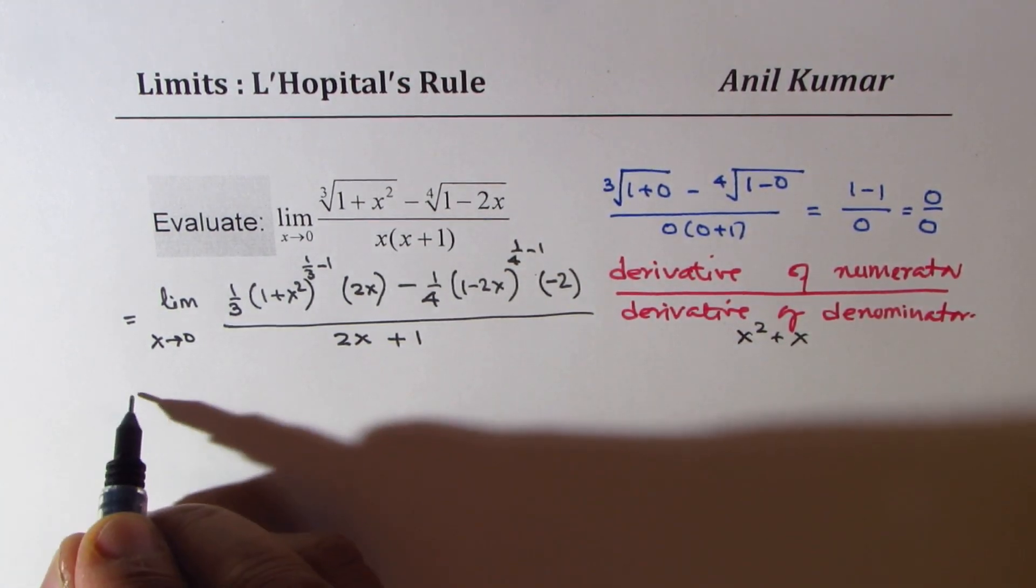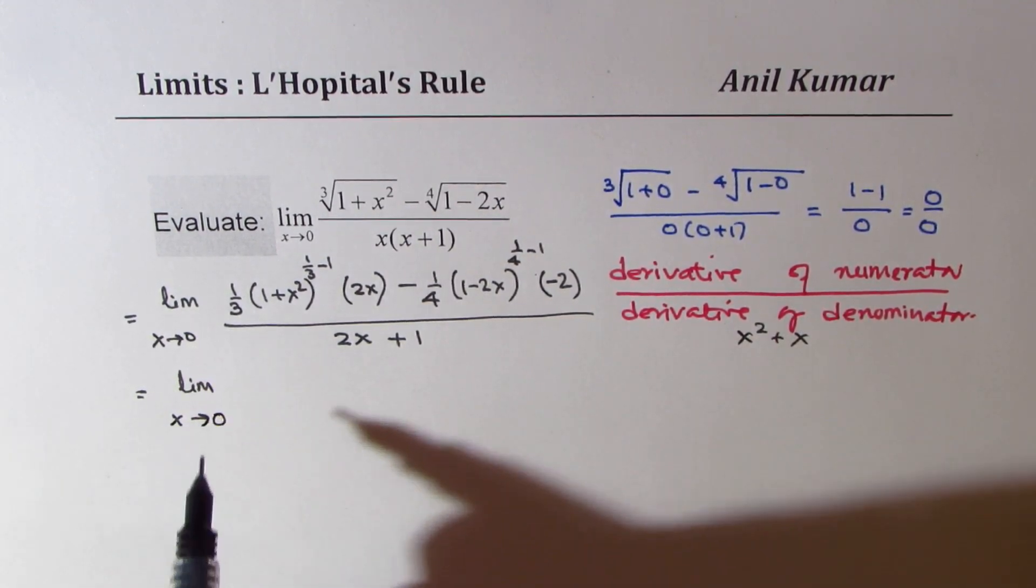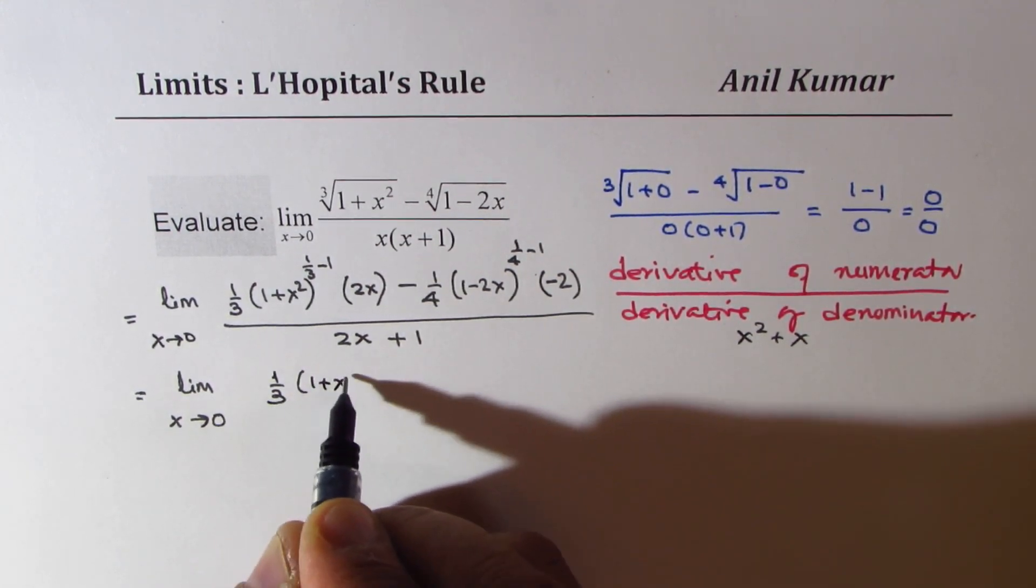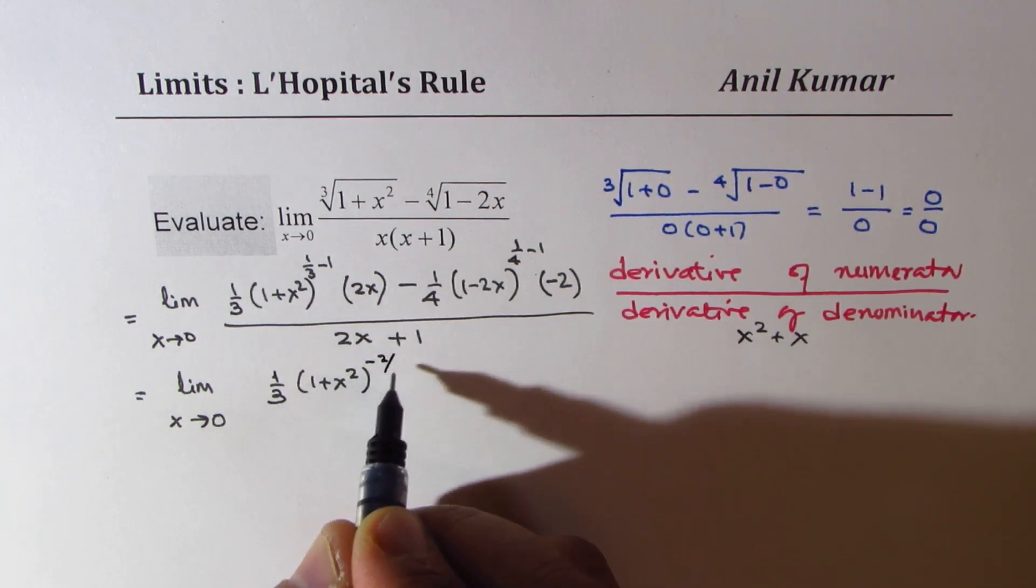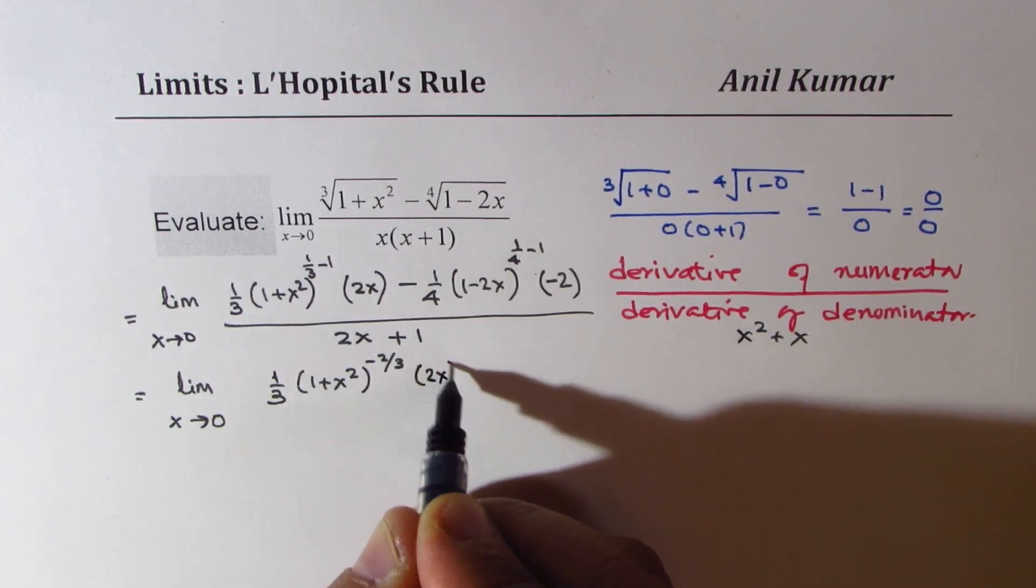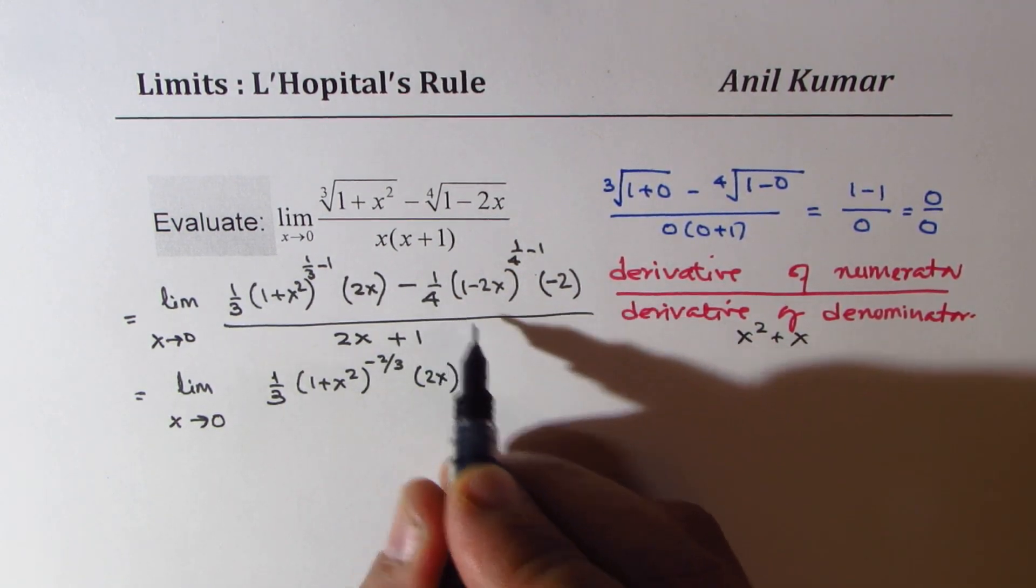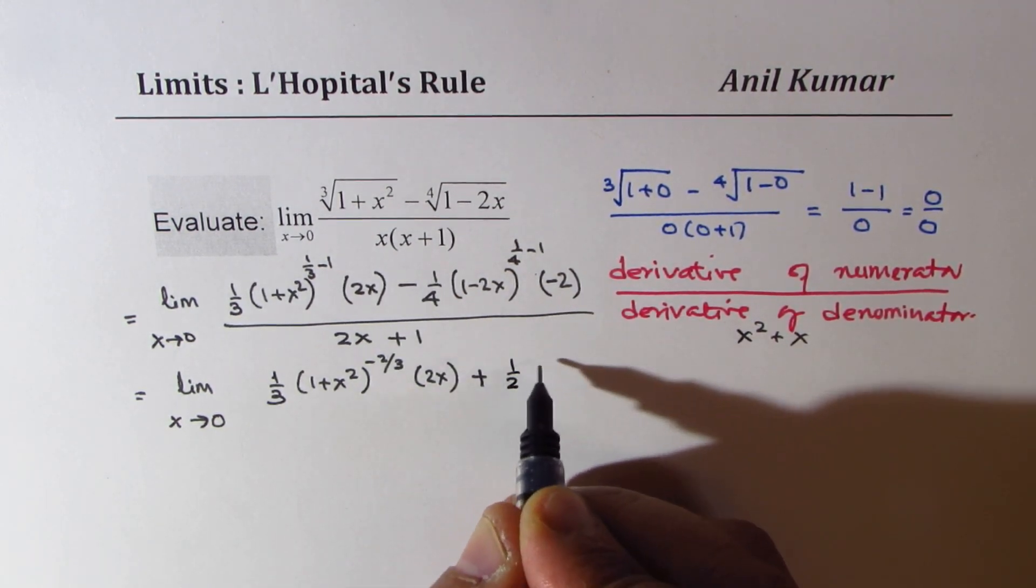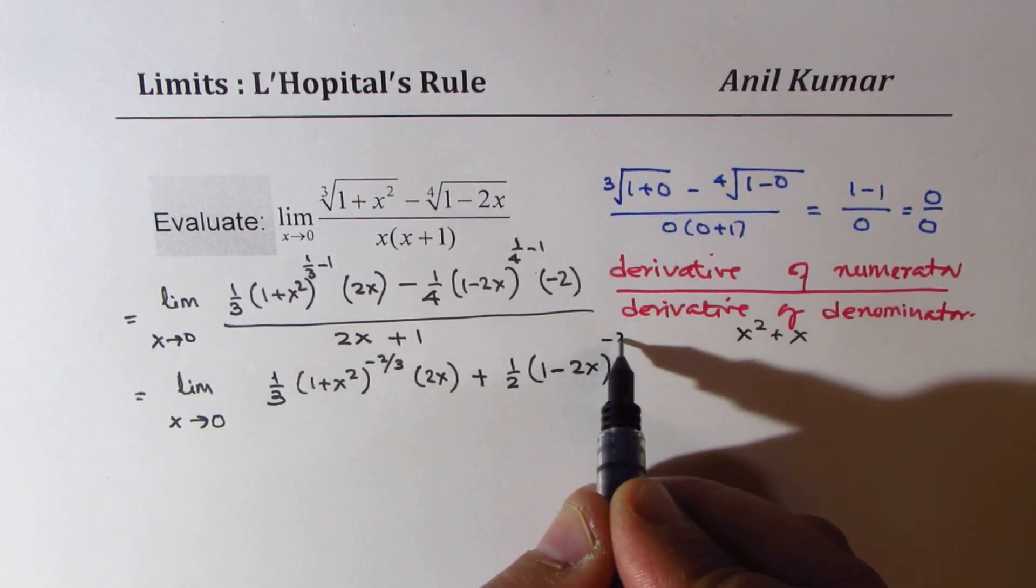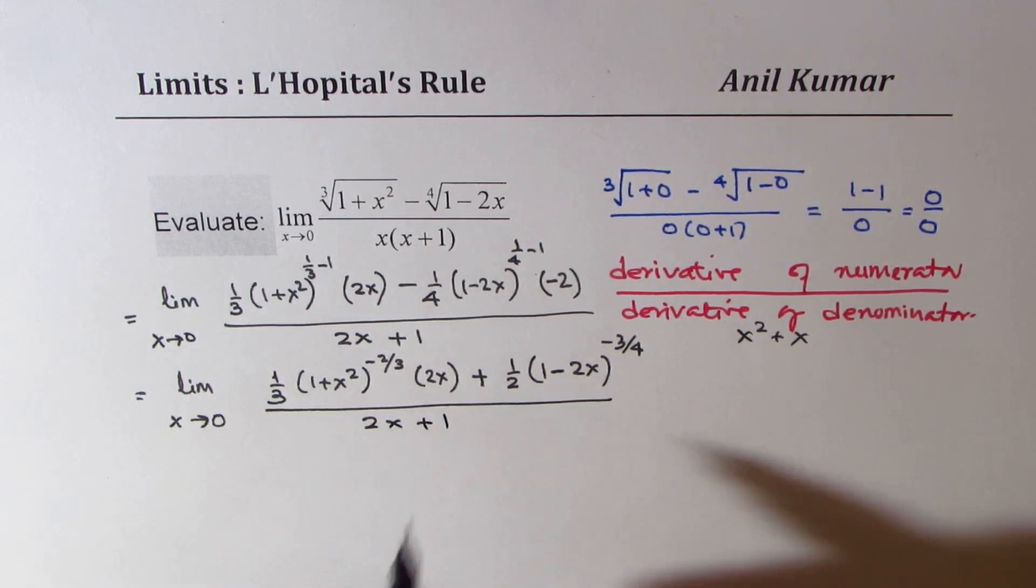Let's simplify this. We get limit x approaches 0 for 1 third of 1 plus x squared to the power of minus 2 over 3 times 2x times 2x minus. Now, this minus and minus becomes plus, so we get half of 1 minus 2x to the power of minus 3 over 4, divided by 2x plus 1.